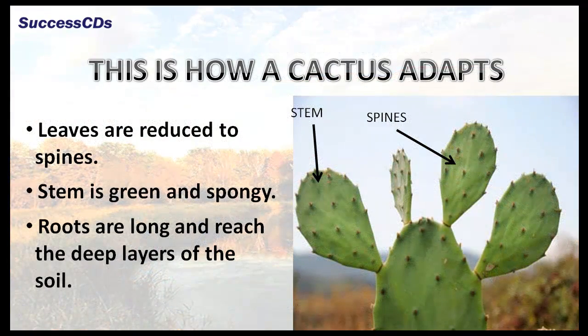A very common desert plant is cactus. In a cactus, leaves are reduced to spines. The stem is green and spongy. Roots are long and reach the deep layers of the soil.